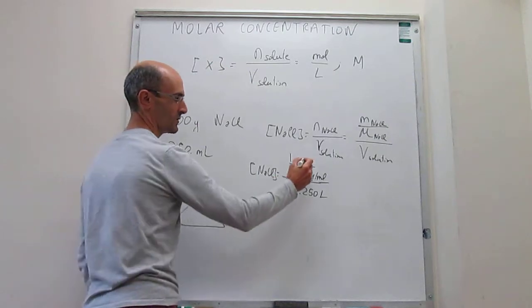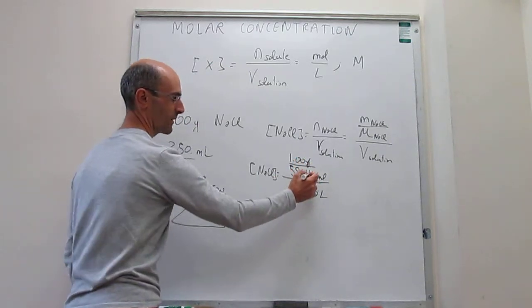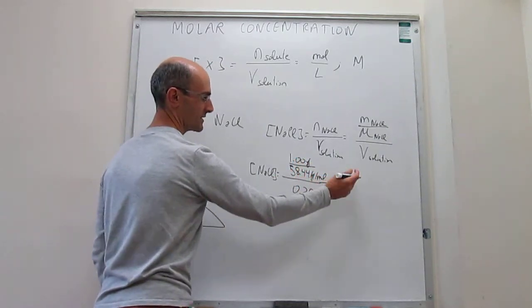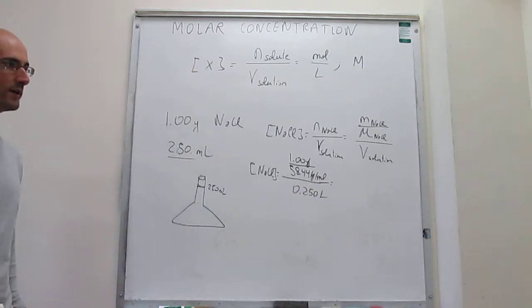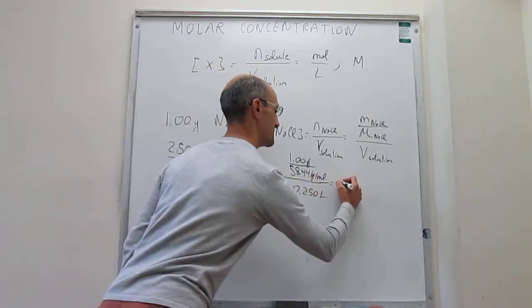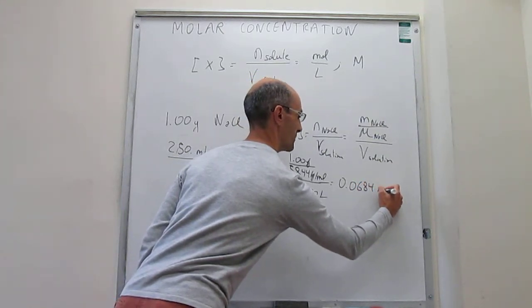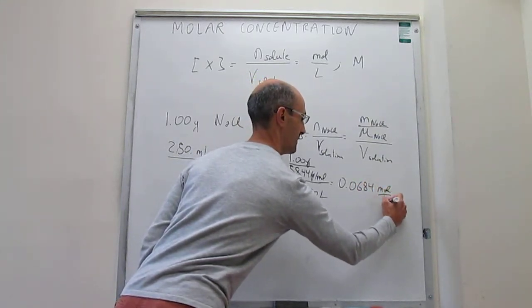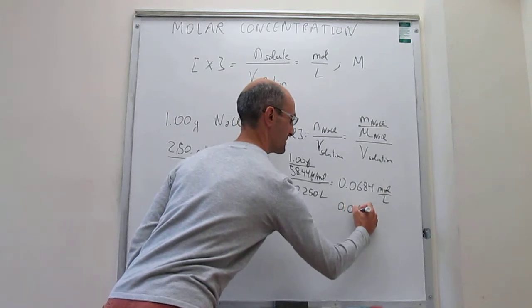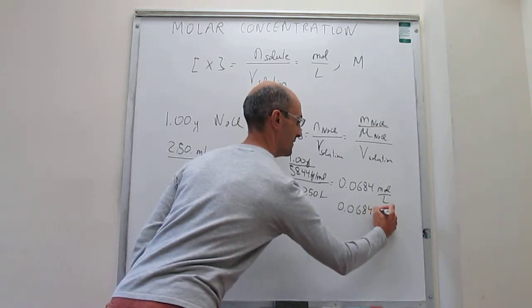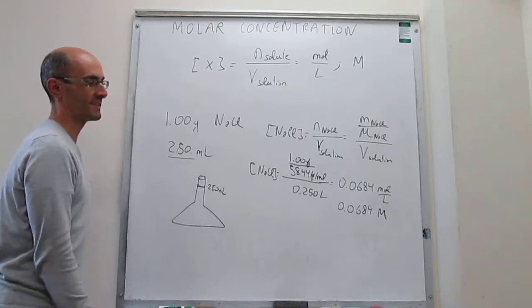Let's see how the units work out. Grams cancel out with grams, and then what you get out of this is going to be moles per liter for molarity. The result is 0.0684 moles per liter, or typically we use capital M, and we read that as molar.